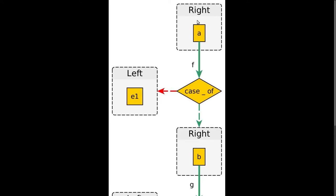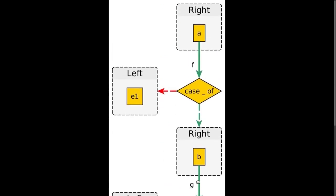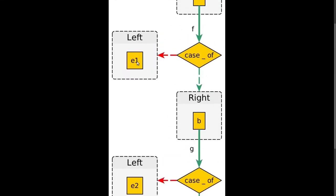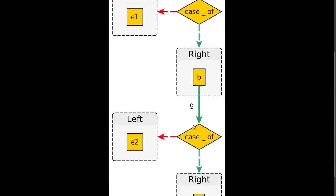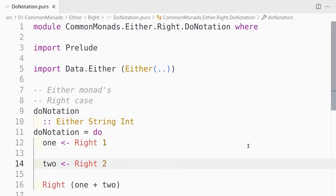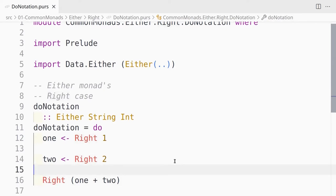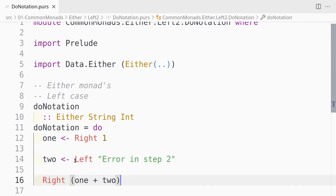With the next example we have the Either monad, which functions similarly. The Right case works the same way as Identity — if we have a Right a, we continue on. However, Either allows you to short circuit. If we get a Left, we never continue with the rest of our bind calls — we stop immediately. It's a short-circuiting computation. In code, it looks something like this: if we have an initial box of Right, the bind call occurs successfully, but if we then get a Left, everything beyond that point doesn't get run at all. Those computations never occur because we short circuit once we get that Left.